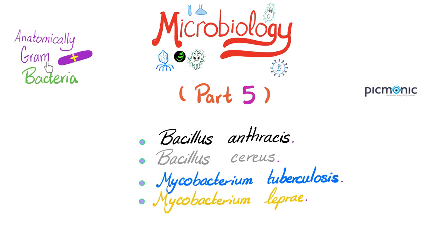All of them are anatomically gram-positive bacteria. But why say 'anatomically gram-positive' rather than just gram-positive? Because when we try to stain the two mycobacteria with gram stain, they did not stain. We know they have the same characteristics as gram-positive bacteria theoretically, but in the lab the gram stain did not work. What worked? Acid-fast stain.